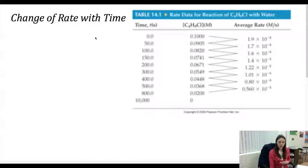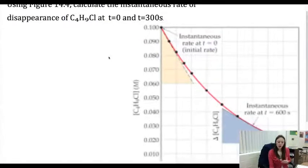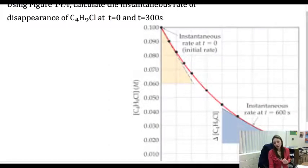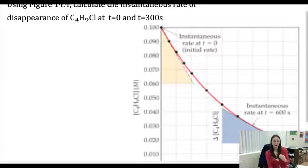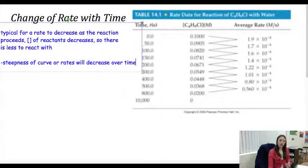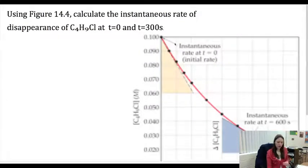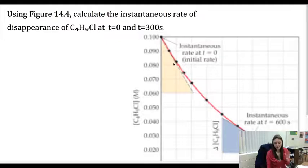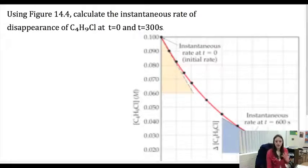If you look at the graph for this reaction, notice how the steepness of the curve decreases over time. There's a really steep curve early on, and a much less steep curve later. The graph is simply showing the changing concentration over time, so the rate — the slope of that line — is changing, meaning the average rate is changing. An instantaneous rate is the rate at a particular moment. It's the slope of the curve at that particular point in time, which is the slope of the tangent line.